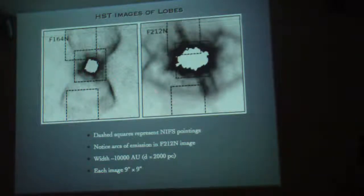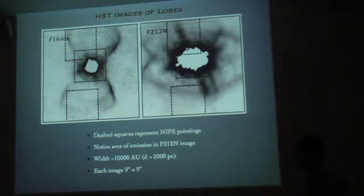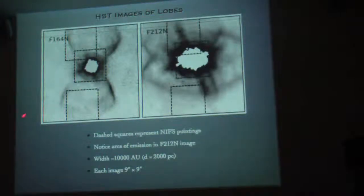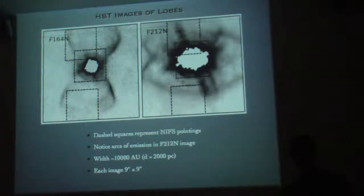In this image, you can see arcs, the arcs of emission, and also the lobes as well. So we assume a distance to the nebula of 2,000 parsecs. This implies that the width of the lobes here is roughly 10,000 astronomical units.